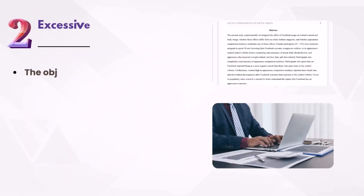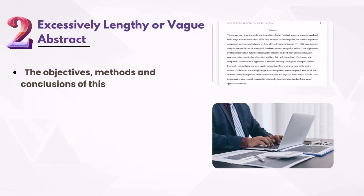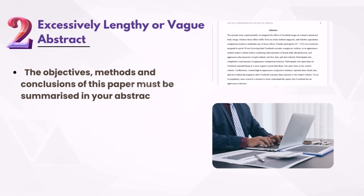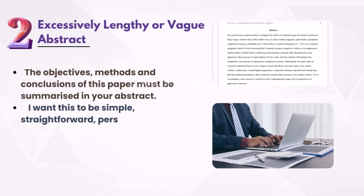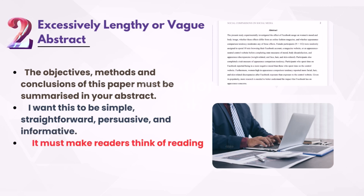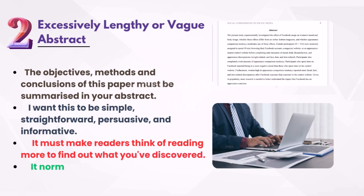2. Excessively Lengthy or Vague Abstract. The objectives, methods, and conclusions of the paper must be summarized in your abstract. It should be simple, straightforward, persuasive, and informative. It must make readers think about reading more to find out what you've discovered. It normally has a length of one paragraph.